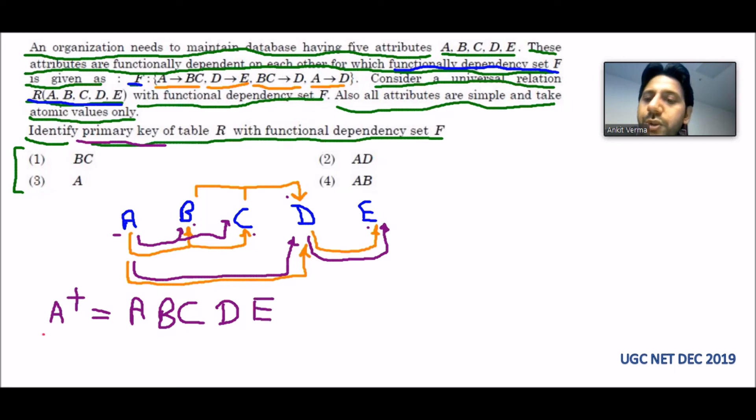With D we can find E, so I am writing E here. So with the closure of A you can see that we can find A, B, C, D, E.